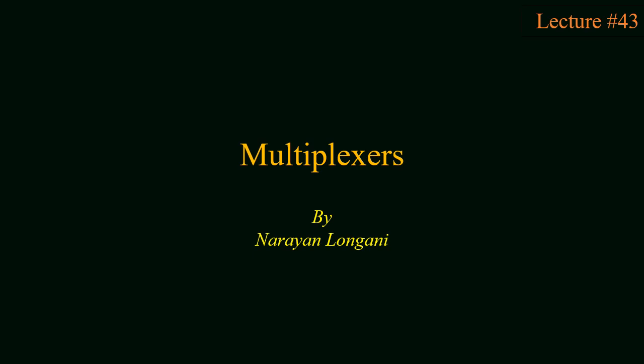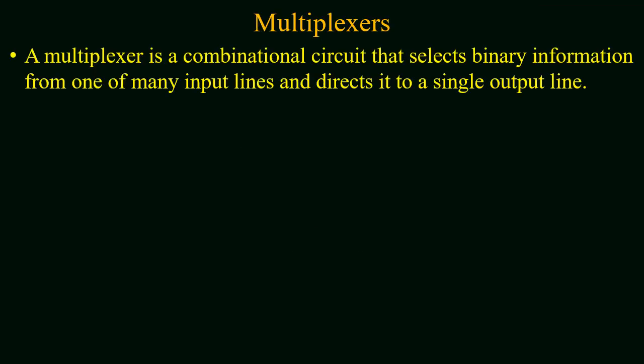Hello everyone and welcome back to the series of Digital Logic Design. Today we will study about multiplexers. A multiplexer is a combination circuit that selects binary information from one of many input lines and directs it to a single output line. If we have multiple sources of information and we have to use information from a single source only, then for this purpose we will use the multiplexer.